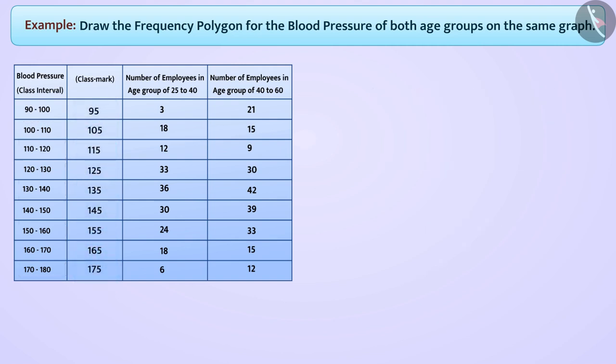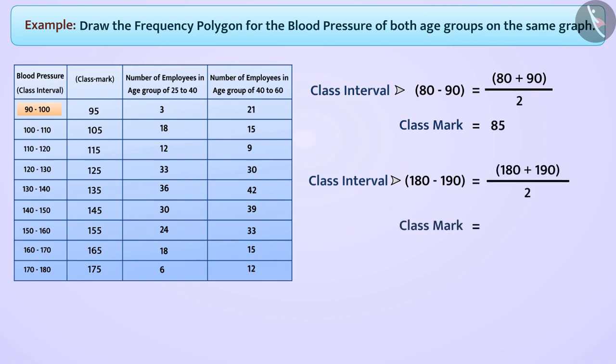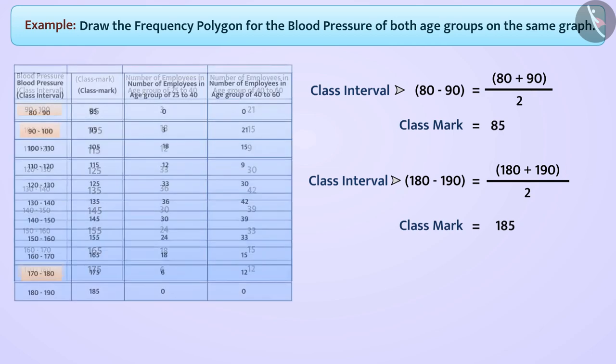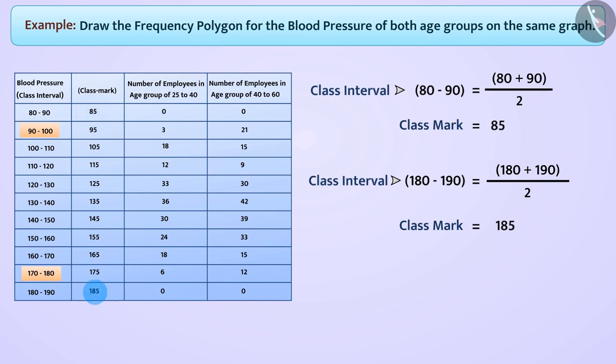Now, before taking class interval 90 to 100, we will take class interval 80 to 90 with frequency 0, whose class mark is 85. Similarly, we will take class interval 180 to 190 with frequency 0, whose class mark is 185 after class interval 170 to 180. In this way, the class mark is from 85 to 185.